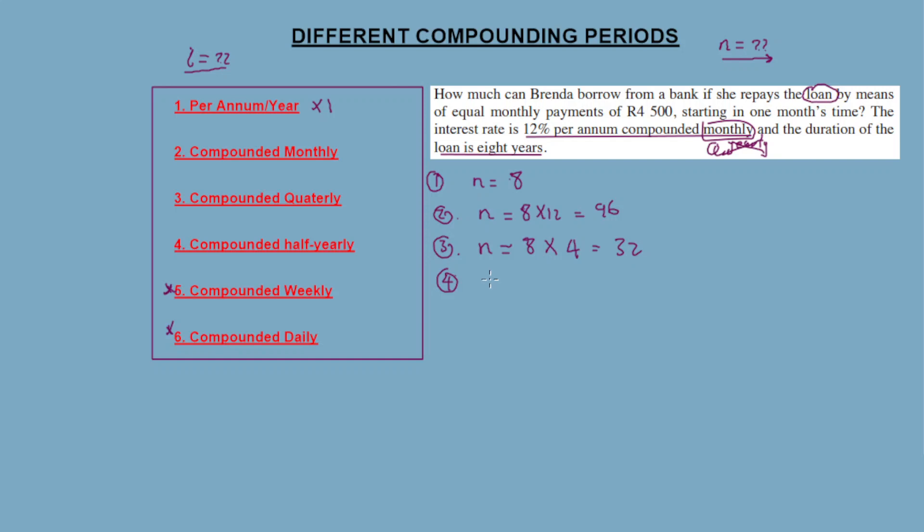Number four: half yearly, it's 8 times 2. We multiply by 2 because there's 2 halves in a year, so it's 16. Number five: weekly, multiply by 52. 8 times 52 is equal to 416.